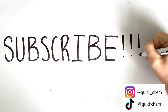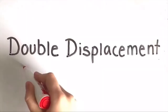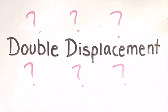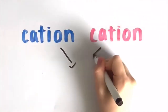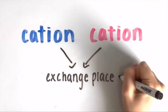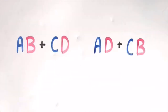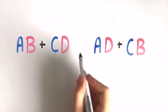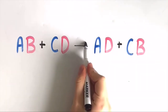During a double displacement reaction, the cations in two different ionic compounds exchange places, forming two new ionic compounds. This reaction is represented by the formula AB plus CD yields AD plus CB.